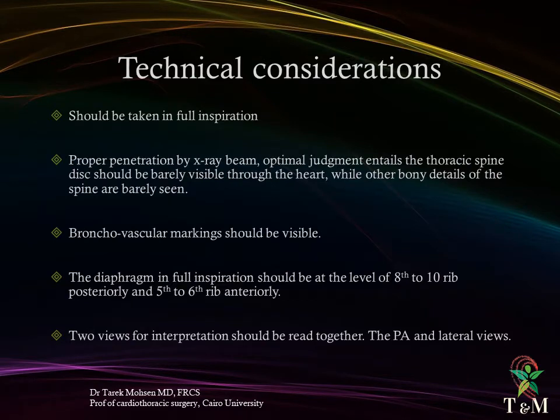Technical considerations: a chest x-ray should be taken in full inspiration. Proper penetration by the x-ray beam can be assessed when the thoracic spine discs are barely visible through the heart, while other bony details of the spine are barely seen. Bronchovascular markings should be visible. The diaphragm in full inspiration should be at the level of the 8th to 10th rib posteriorly and the 5th to 6th rib anteriorly.